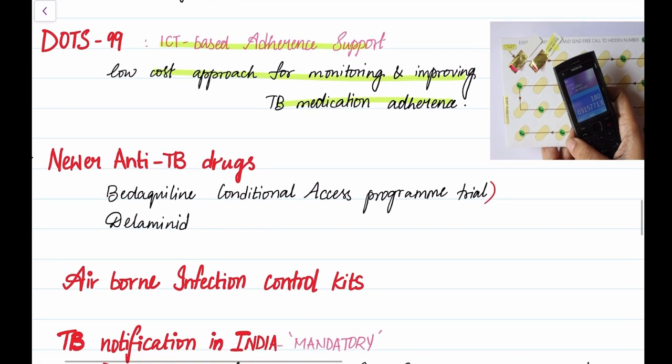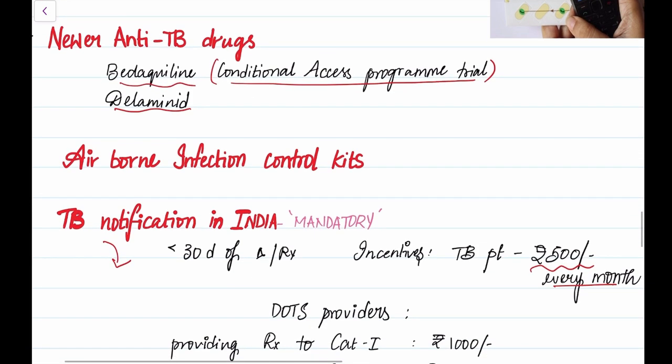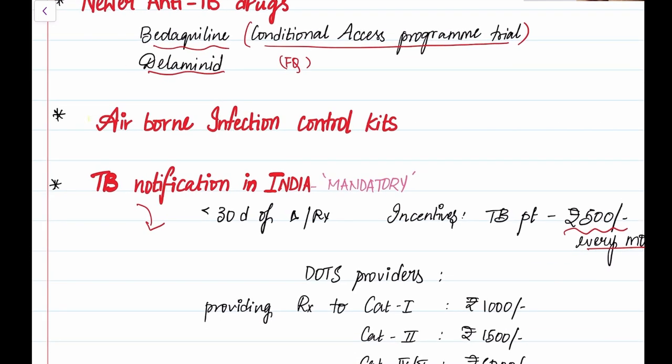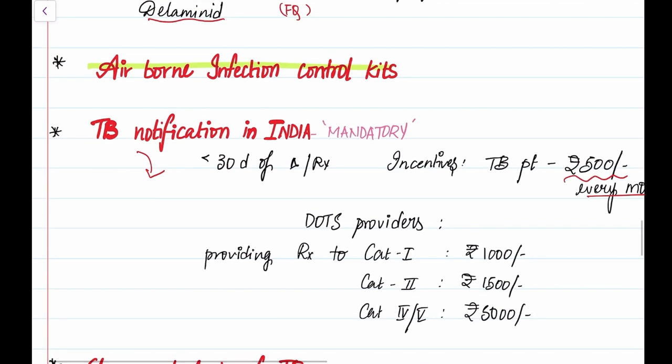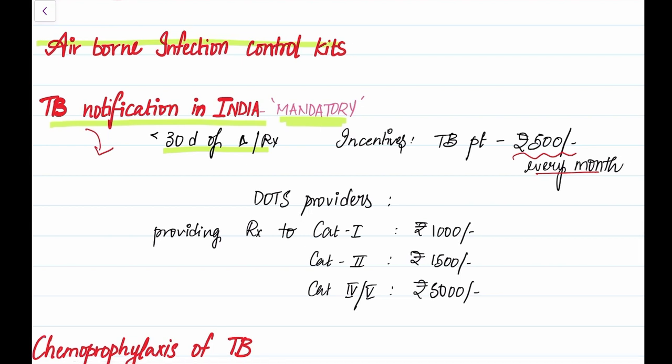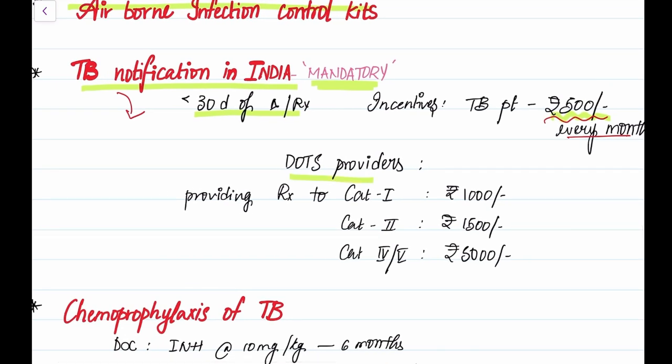The next strategy is newer anti-TB drugs, which are bedaquiline and delamanid. These are included in the conditional access program, basically given in polydrug resistant TB where there is fluoroquinolone resistance and second-line drug resistance. Next is airborne infection control kits that are distributed, then TB notification in India. This is mandatory where there is TB notification within 30 days of diagnosis and treatment. There are incentives given to TB patients, 500 rupees every month, and also to DOTS providers: 1000 rupees for category 1, 1500 for category 2, and 5000 rupees for category 4 and 5.